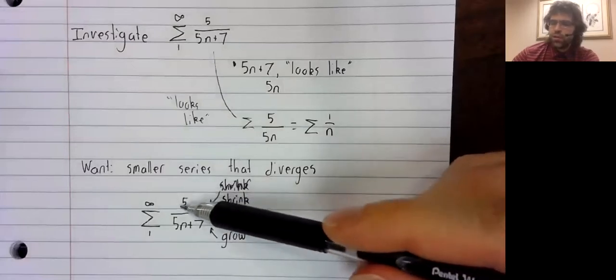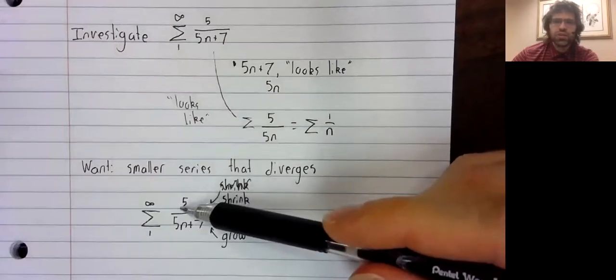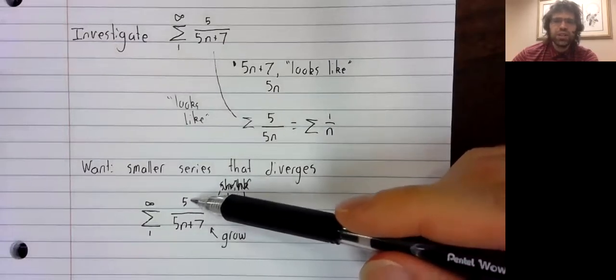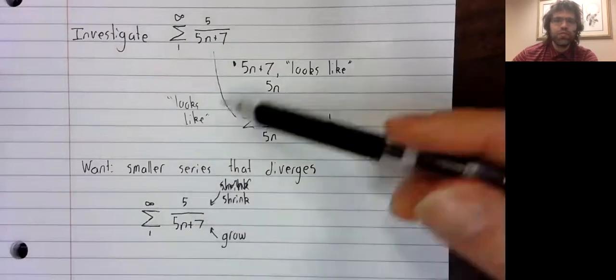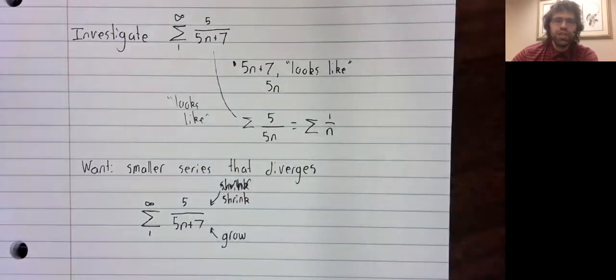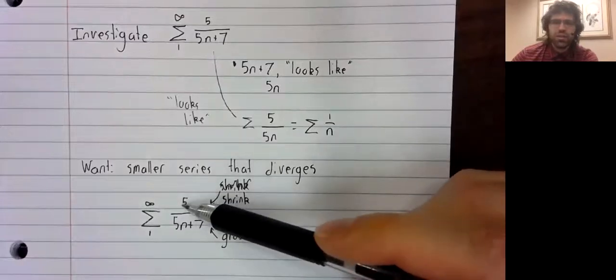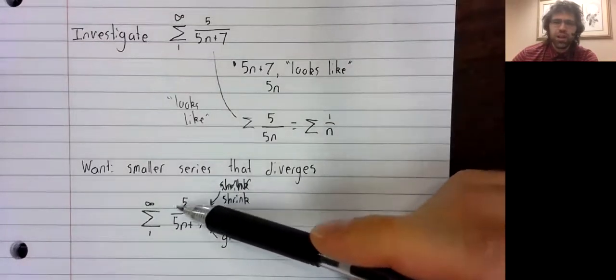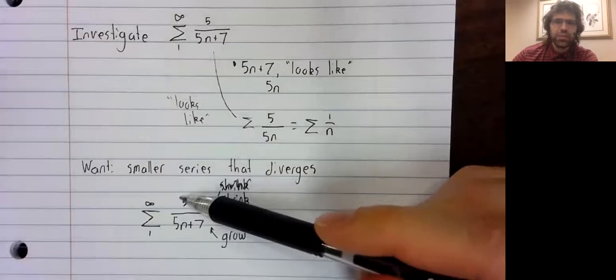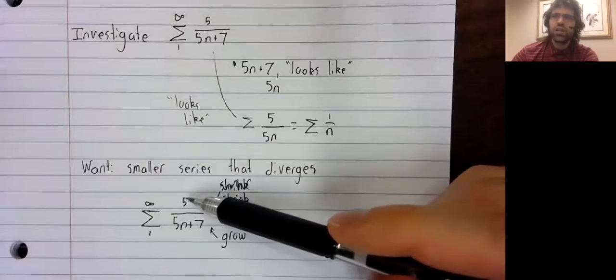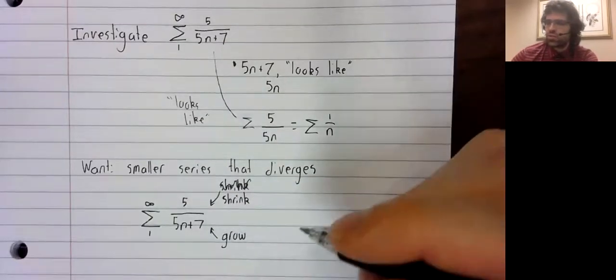Now, the numerator is just a constant. I mean, we could replace this 5 with a 4 or a 3 or whatever, but constant multiples aren't really changing convergence.